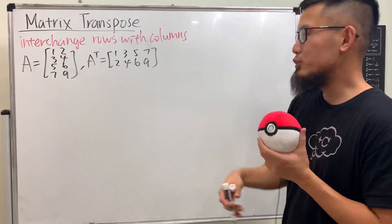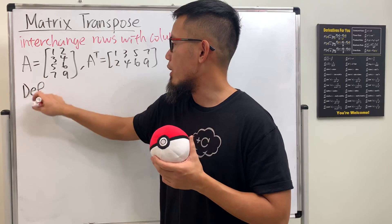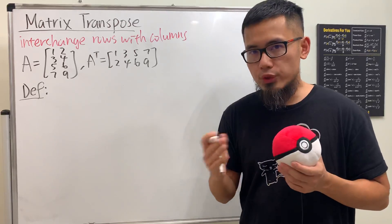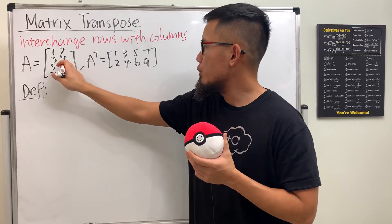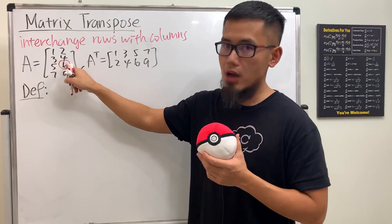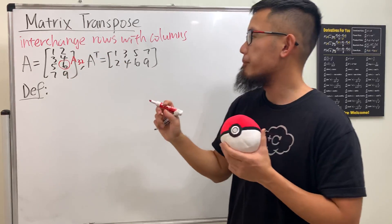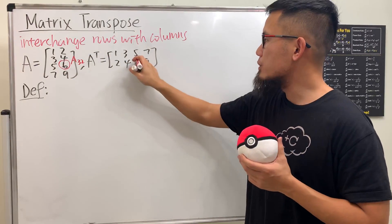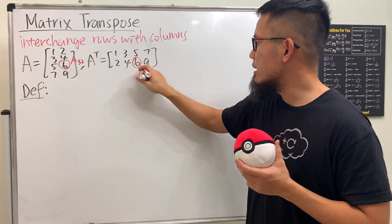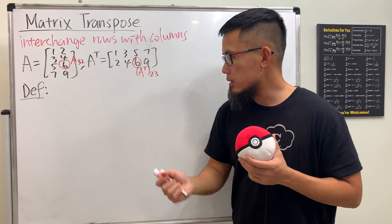And if you have a square matrix, it's pretty much the same thing. Here's the key notation you have to know — this is the definition. Pay attention to the entries. For example, if you look at the 6, where is the 6? This is in the 3rd row, 2nd column, so we write this as A 3, 2. And where is the 6 in the transpose? This is the 2nd row and the 3rd column, so we write this as A transpose at 2, 3 — 2nd row, 3rd column.